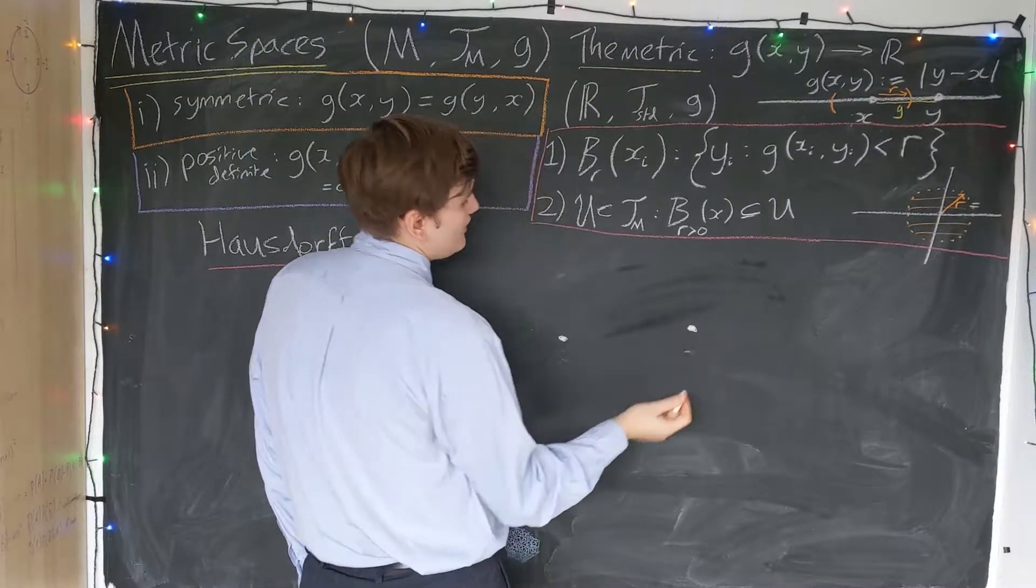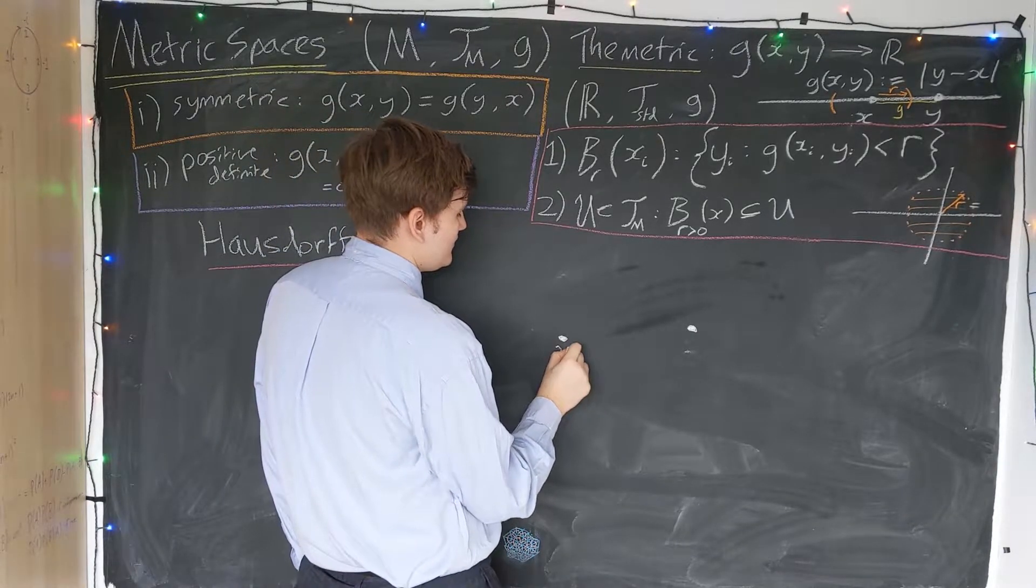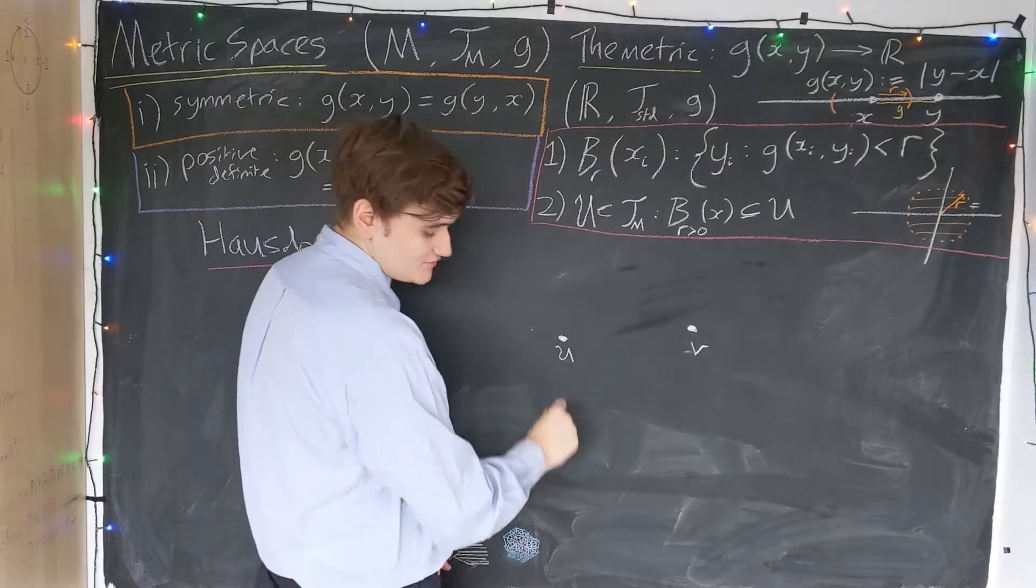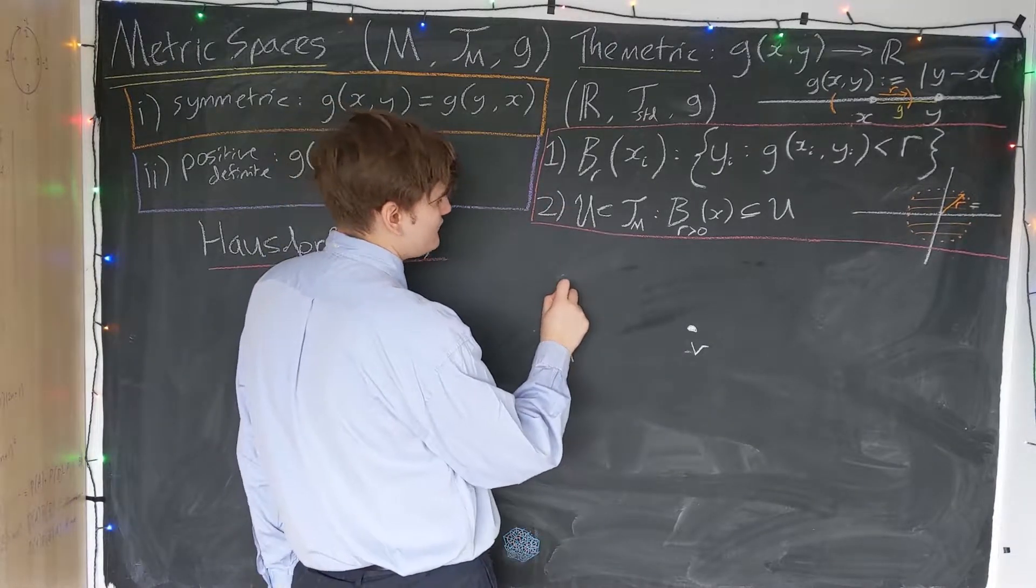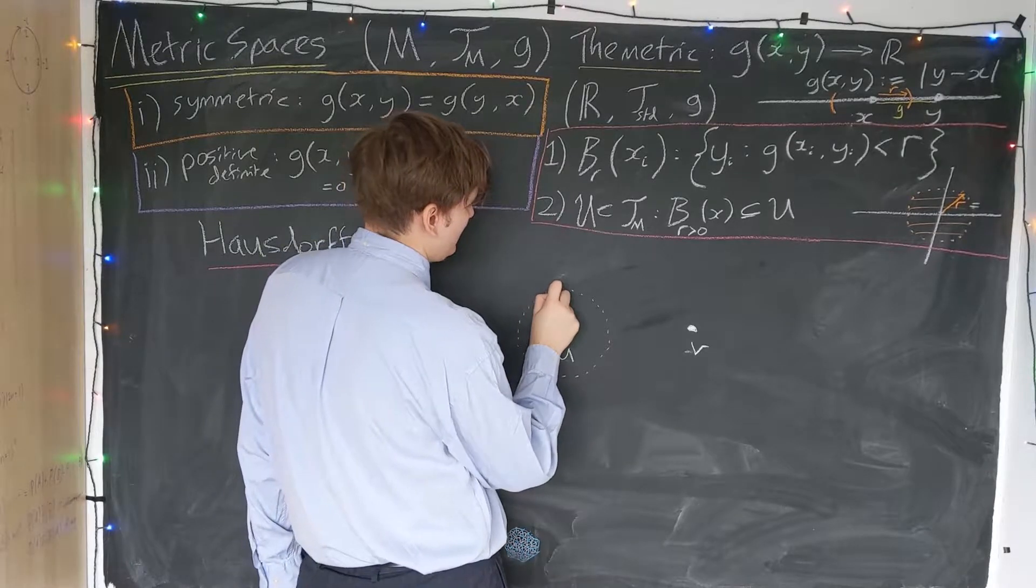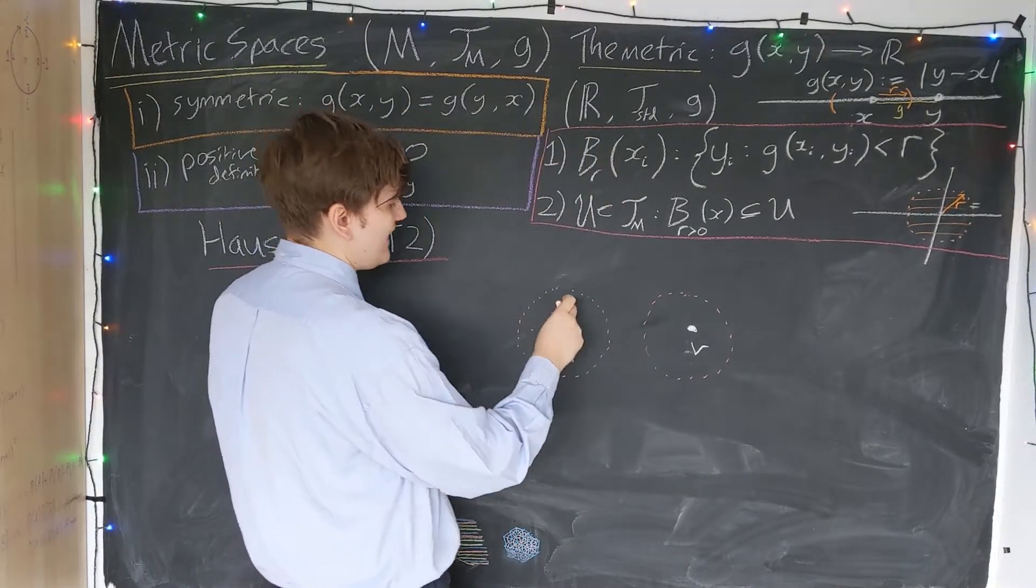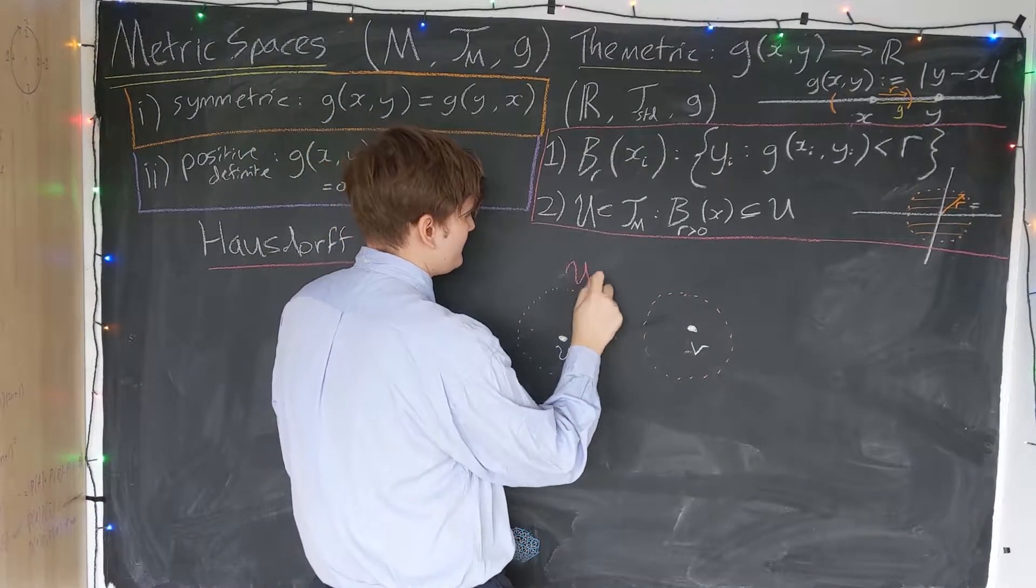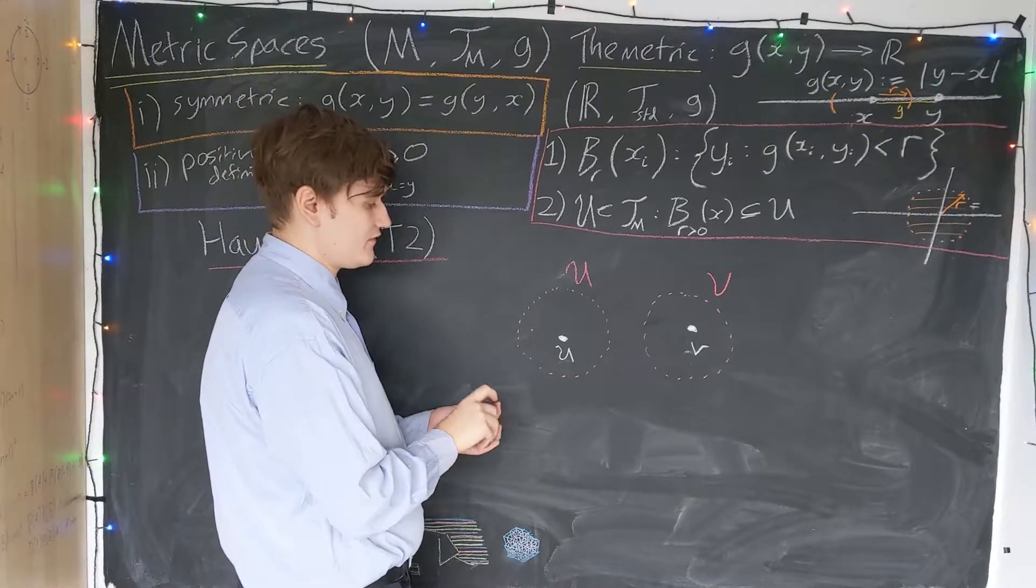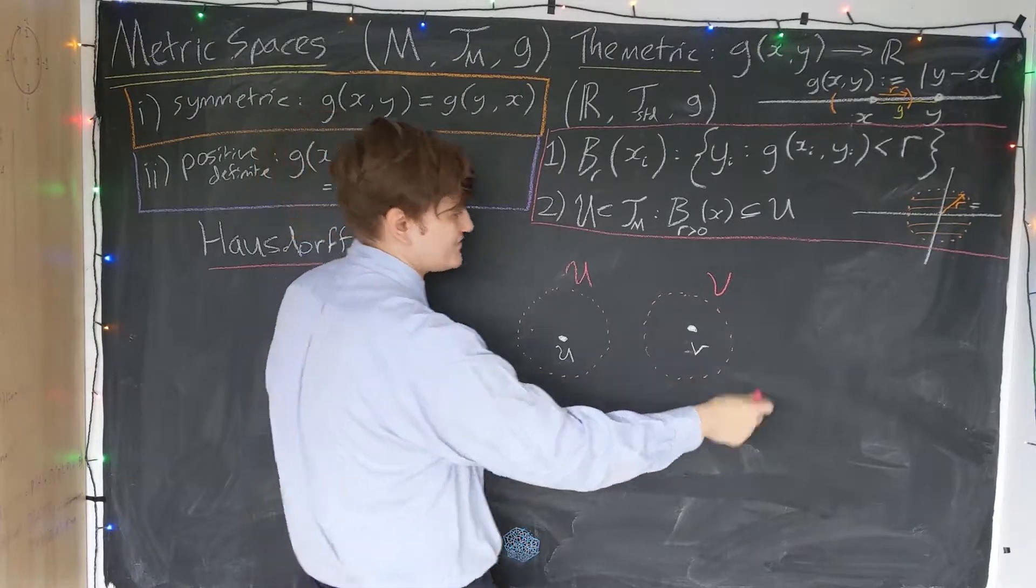If we have two distinct points in our topological space, I'll call them u and v, to be Hausdorff, we have to be able to construct, around each point, an open ball or a neighborhood. So these are two open neighborhoods, I'll call them big U and V. To be Hausdorff, the intersection of these open neighborhoods has to be empty, or zero.